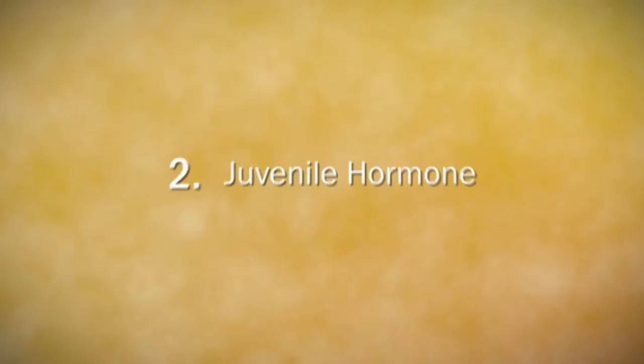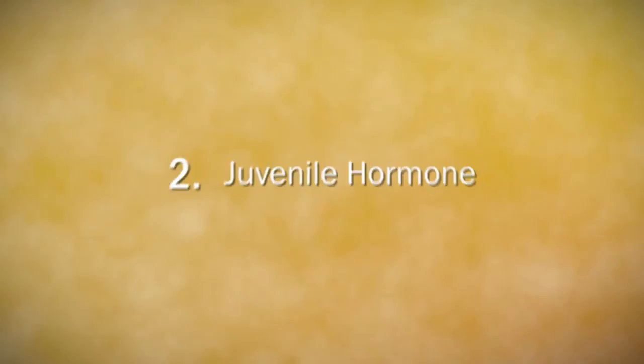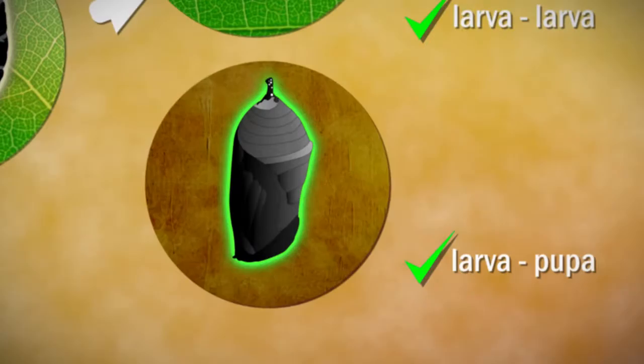While the other one, the juvenile hormone, dictates whether the transformation is from larva to larva or larva to pupa.